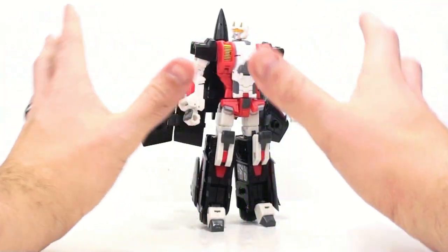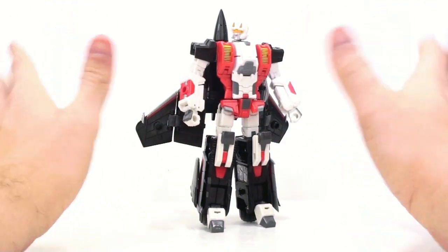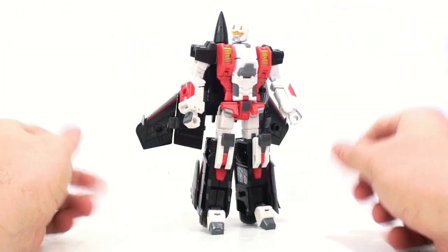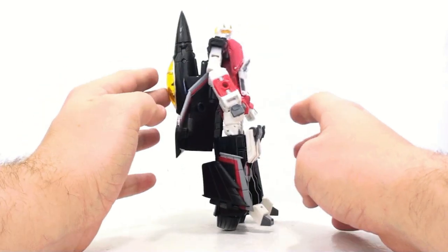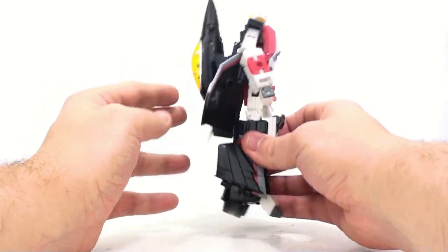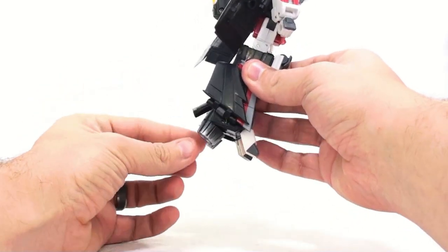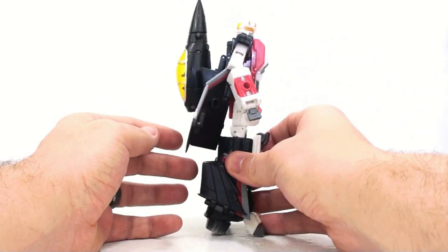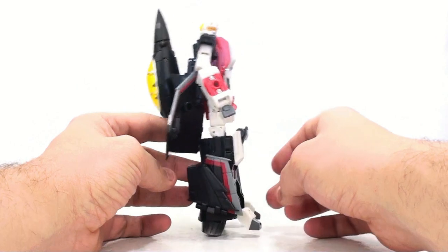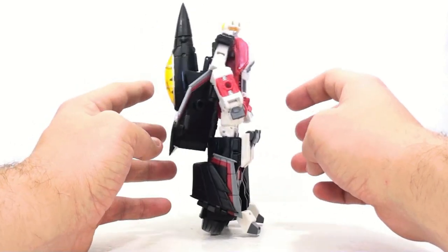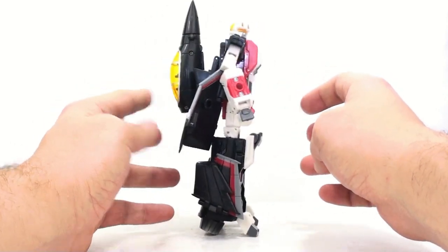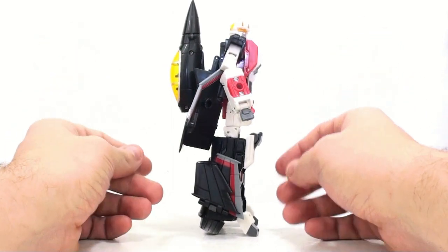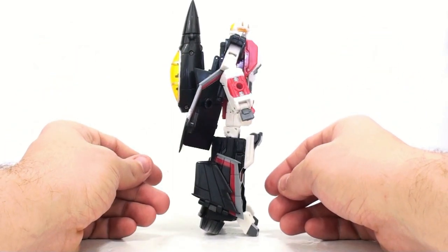Much like I had some minor nitpicks in the actual vehicle mode, I do have some here with the actual robot form as well. One of the biggest being, he is fairly back heavy. As you can see, I did open this up a little bit and I did bend his thruster a little bit. Just to kind of give him a little bit further back of a heel. Just to kind of balance him out a little bit more. Because otherwise, he is a fairly back heavy figure. I mean, he can stand, don't get me wrong. But that's just a minor nitpick I really kind of have.